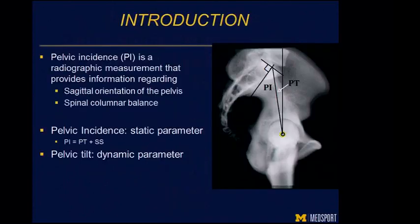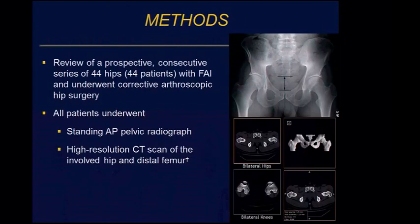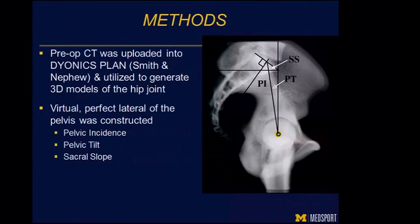That's where we looked at pelvic incidence. Pelvic incidence is the sum of pelvic tilt and sacral slope — it is not a dynamic parameter. We looked in the same population at how pelvic incidence plays a role, using 44 of those 50 hips that we could calculate based on their CT scans, requiring a perfect lateral to measure this.